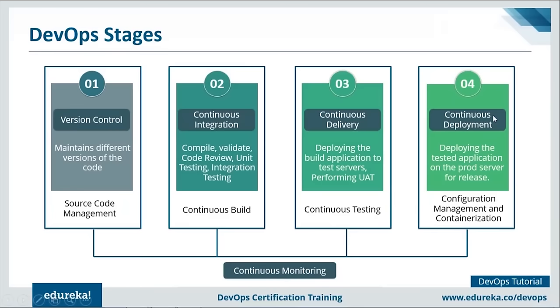Starting with version control: it's about maintaining different versions of code. When multiple developers write code for an application, version control helps you know which developer made which commit at what time, which commit is causing an error, and how to revert back. All these questions are answered with version control tools like Git or Subversion. Then we have continuous integration: continuously building your application.